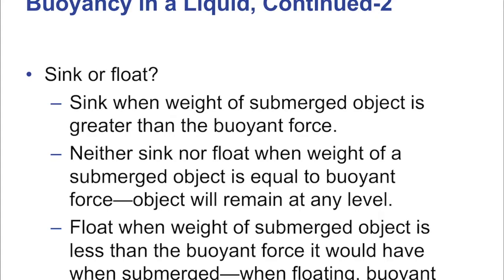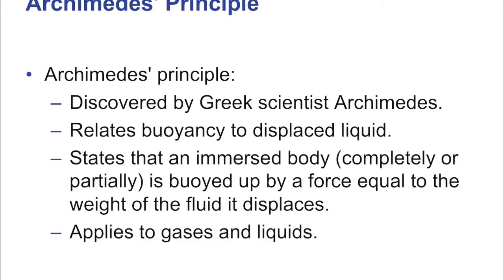An object floats when its weight is less than the buoyant force it would have when fully submerged. When floating, the buoyant force equals the weight of the floating object — so that's quite easy to calculate. Even though the volume displaced calculation is harder for floating objects since not the whole volume is submerged, the buoyant force always exactly equals the weight of the object at equilibrium at the surface.